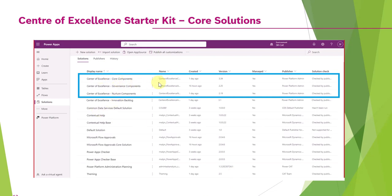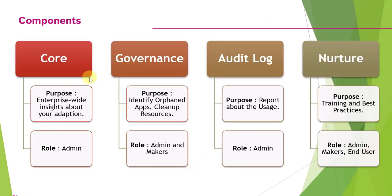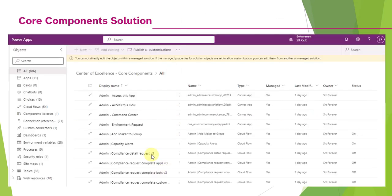The Center of Excellence Starter Kit core solutions include core solutions, governance components, and nurture components. There are also add-on solutions installed alongside the main solution, related to innovation and backlog, ALM, and theming. The purpose of the core component is to provide enterprise-wide insights about your adoption. The governance purpose is to identify orphaned apps, clean up resources, audit logs, and report usage. Nurture defines training and best practices.